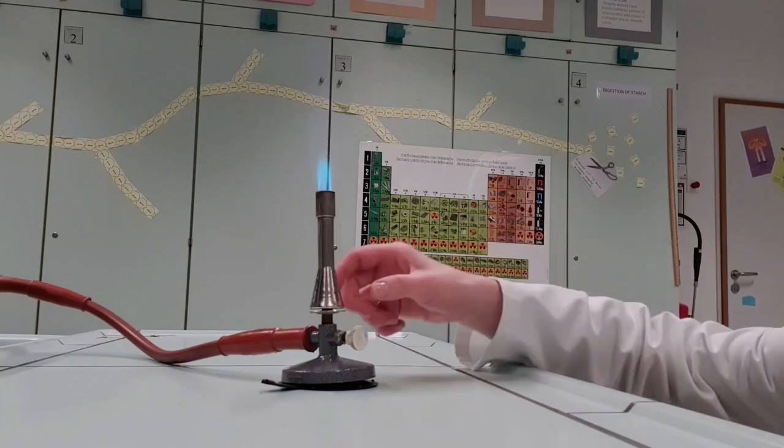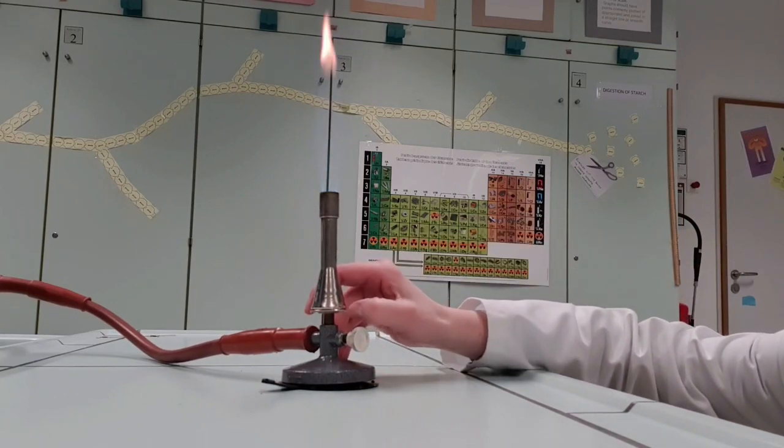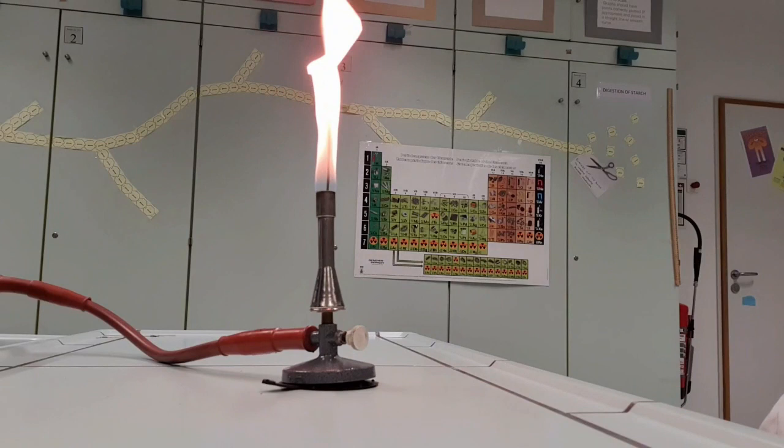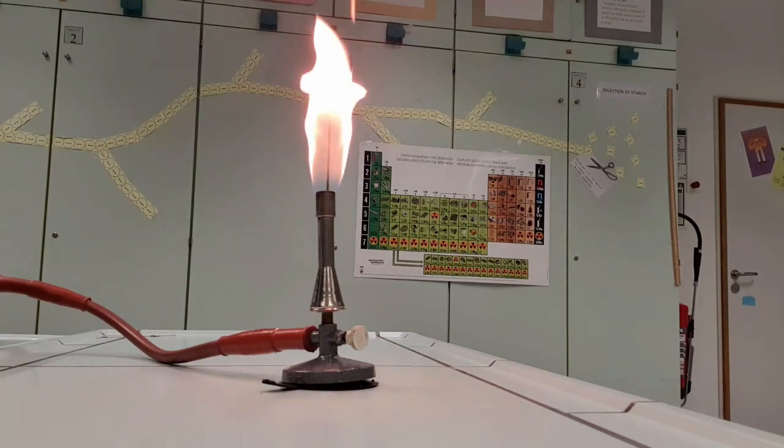And when you've finished, turn it back to your safety flame. Now to turn the Bunsen off, you just do the reverse to the steps that I taught you earlier. Have fun!